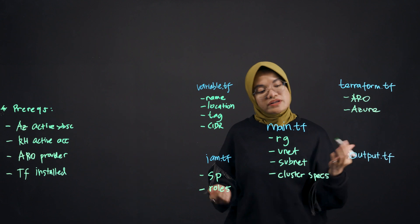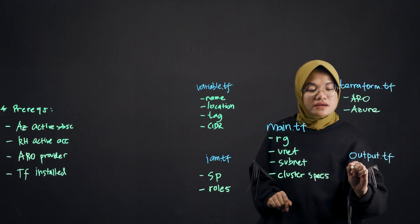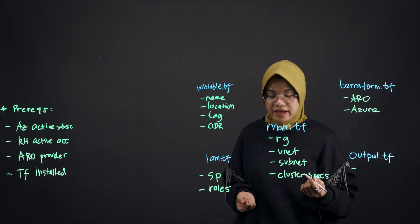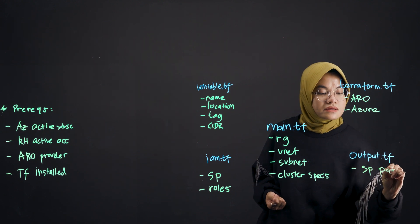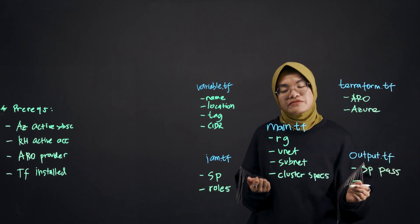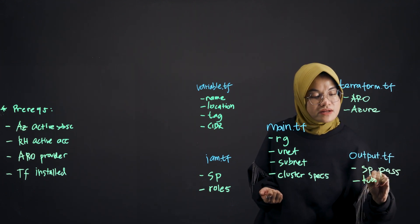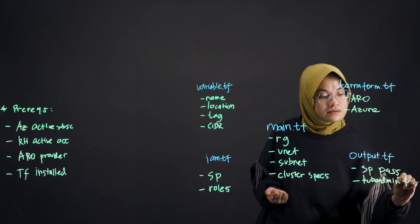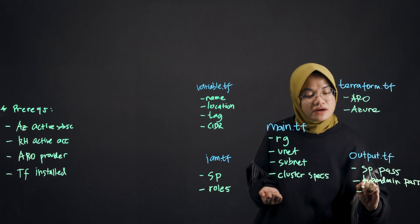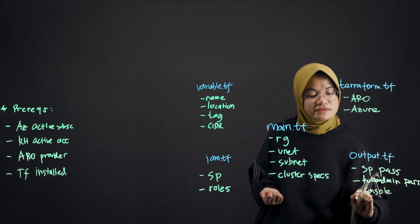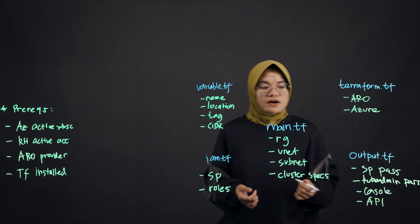And then here for the output, these ones are optional. You would, for example, have a service principle password. And you might want to have kube admin password as well. And the other thing, you might want to have a console and API.